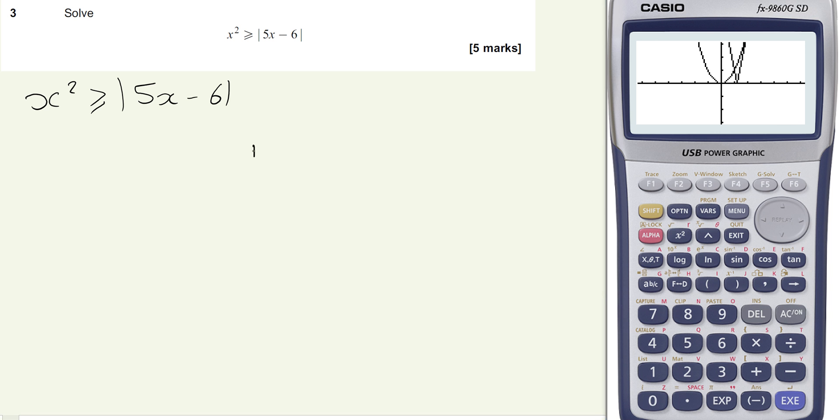So if we do our sketch as well, we can see we've got x squared, which our graph here shows us is slightly wider than our function. So we're kind of doing something like that for x squared.